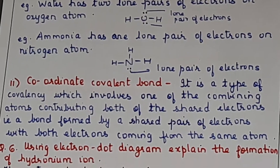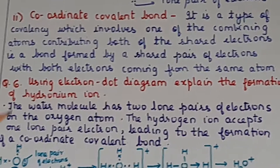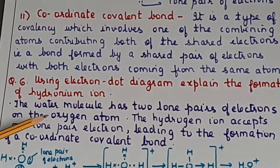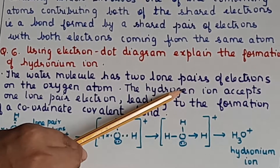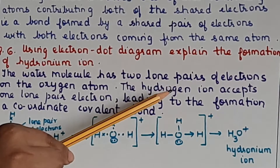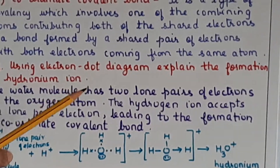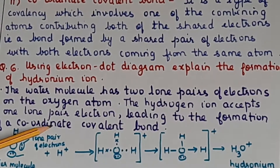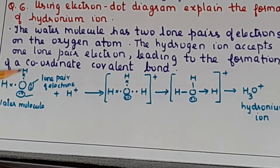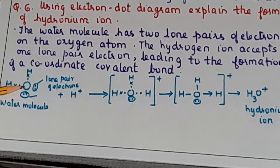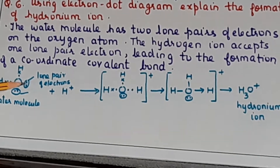Using the electron dot structure, show the formation of the hydronium ion H3O+. The water molecule has two lone pairs of electrons on the oxygen atom. The hydrogen ion (H+) comes from the acid - for example, HCl dissociates into H+ and Cl–. That H+ ion combines with the water molecule. Show the water molecule with its shared electron pairs between hydrogen and oxygen and the lone pairs on oxygen. The H+ ion has already lost its electron, which is why it shows a positive sign. You are using a hydrogen ion, not a hydrogen atom, for a coordinate covalent bond.